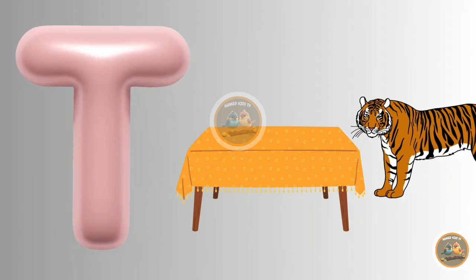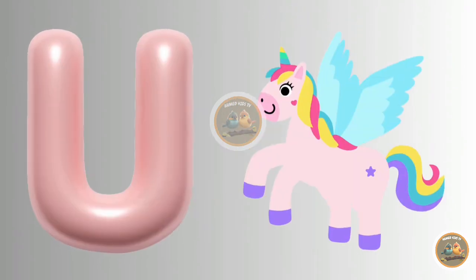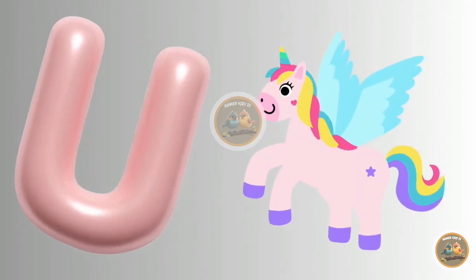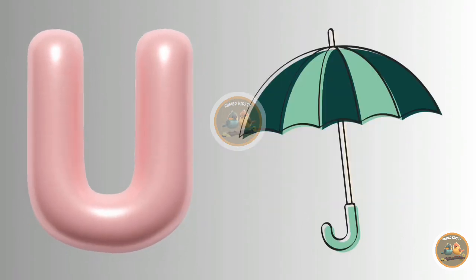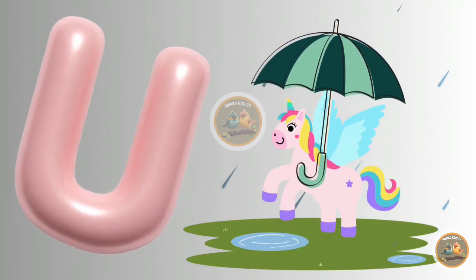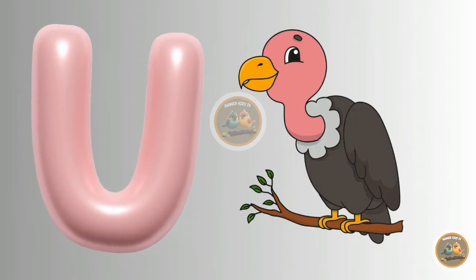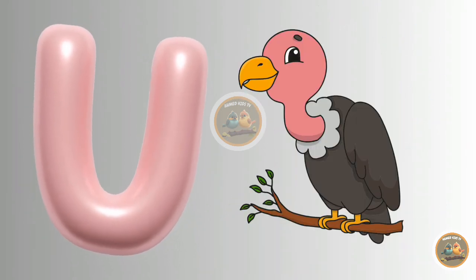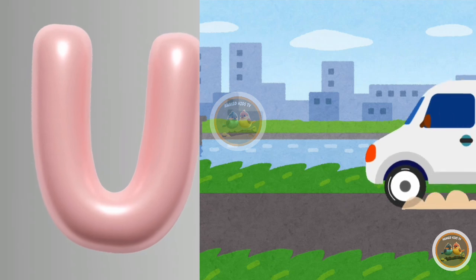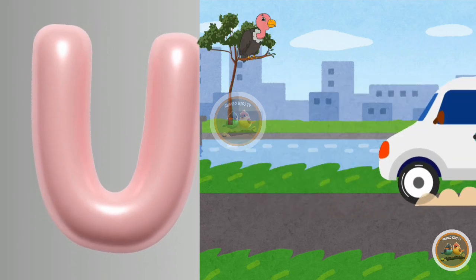U for unicorn, U for umbrella. V for vulture, V for vent.